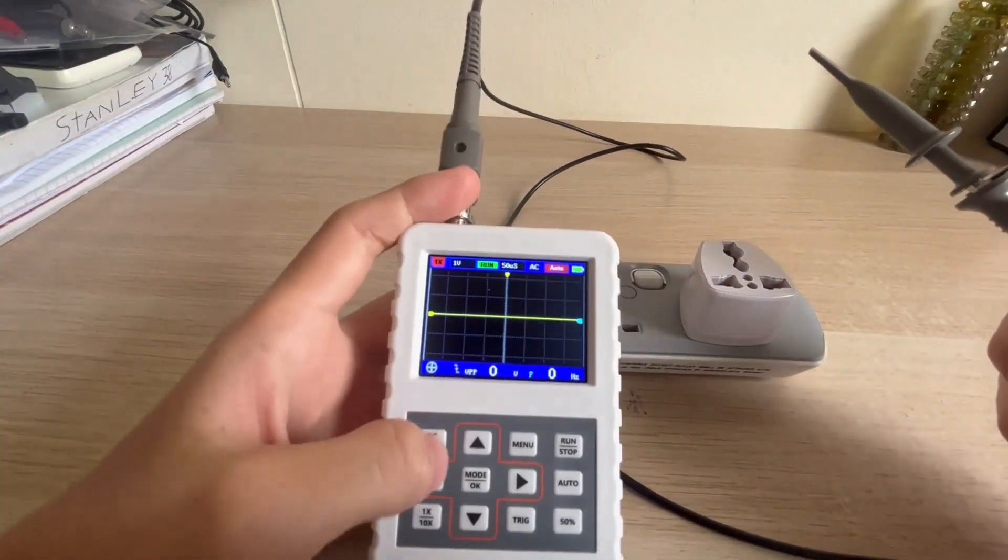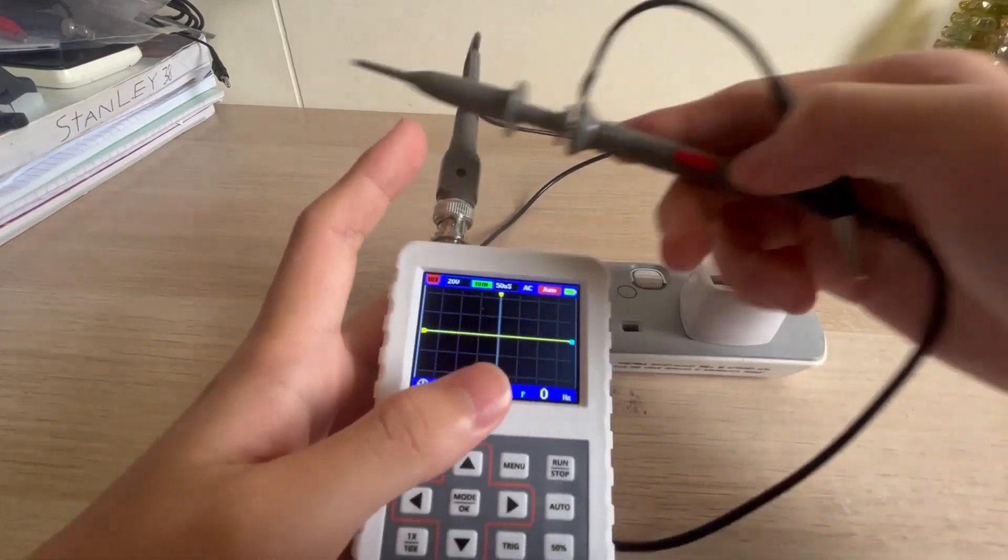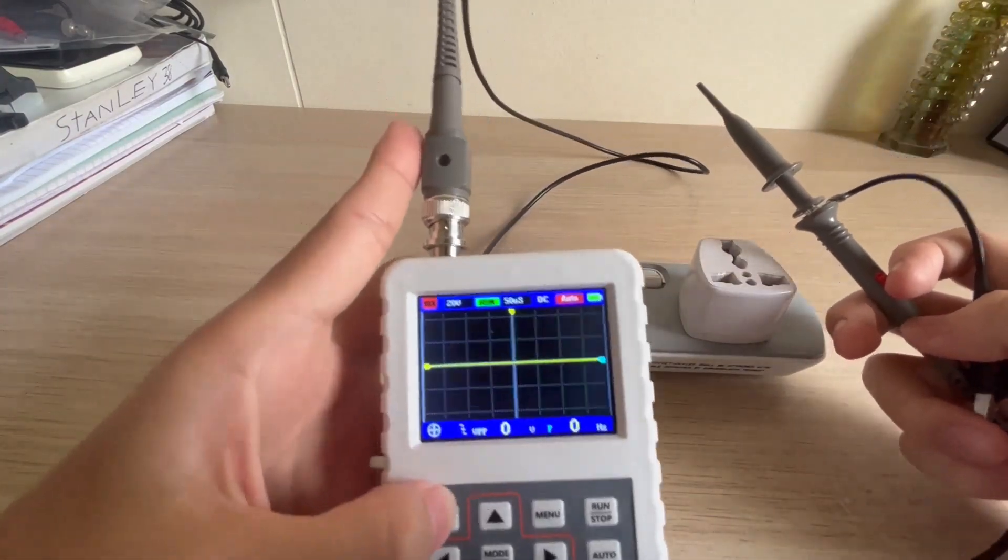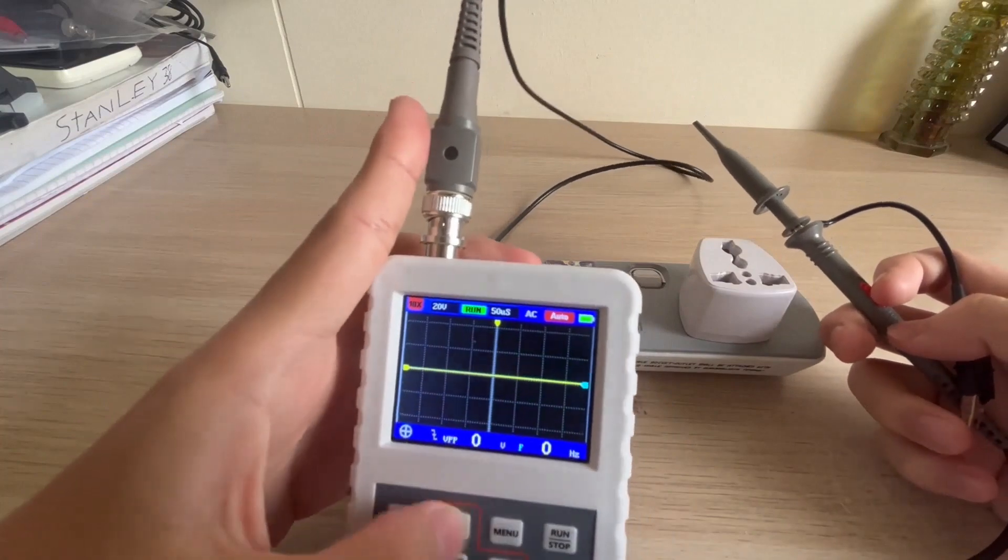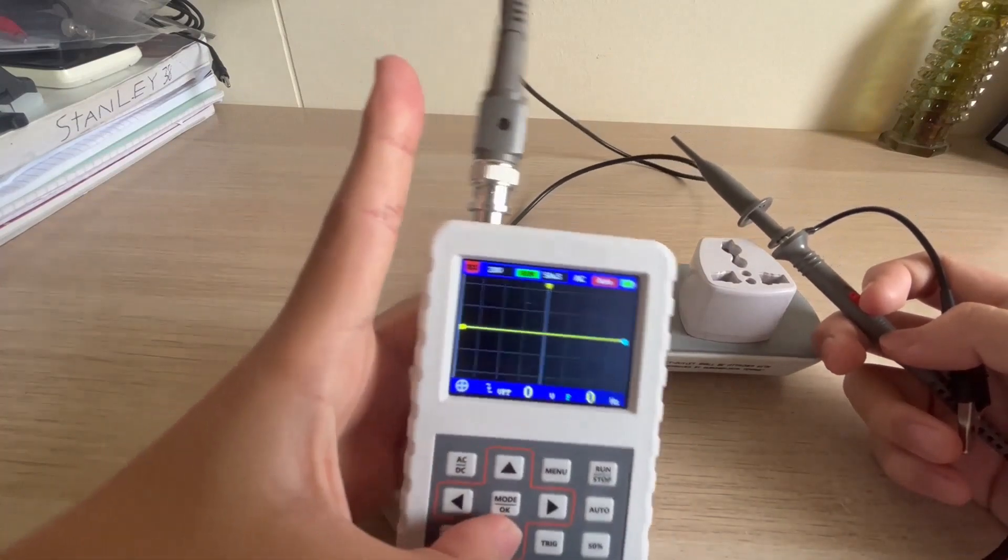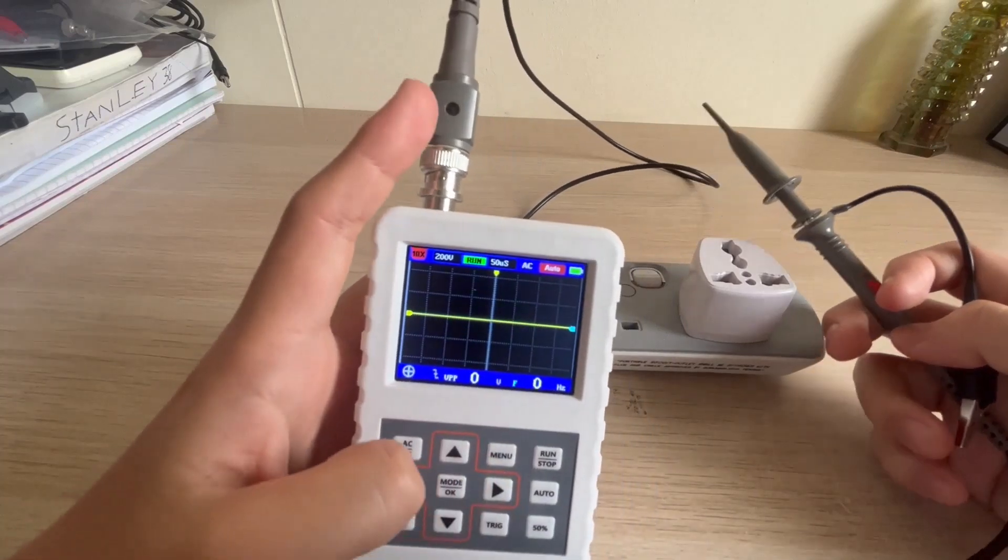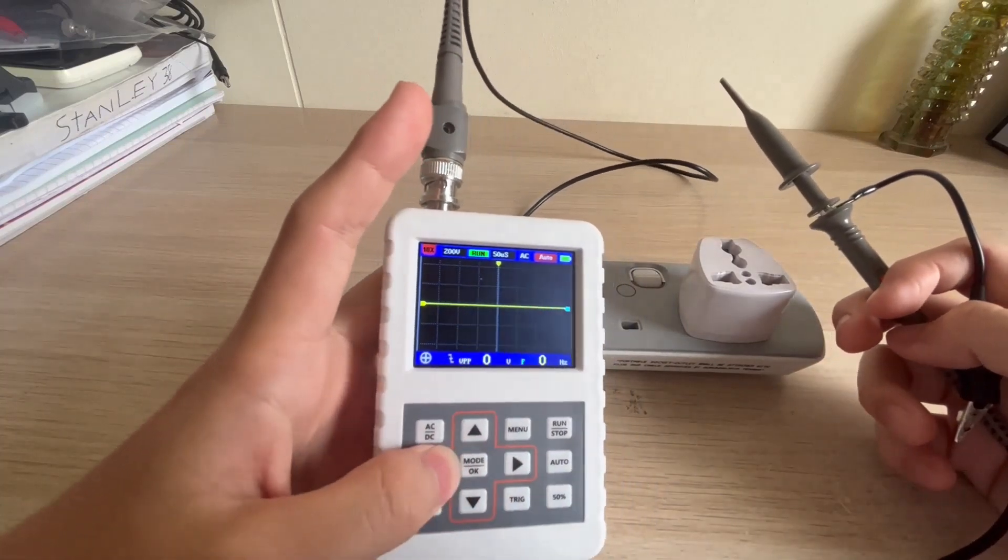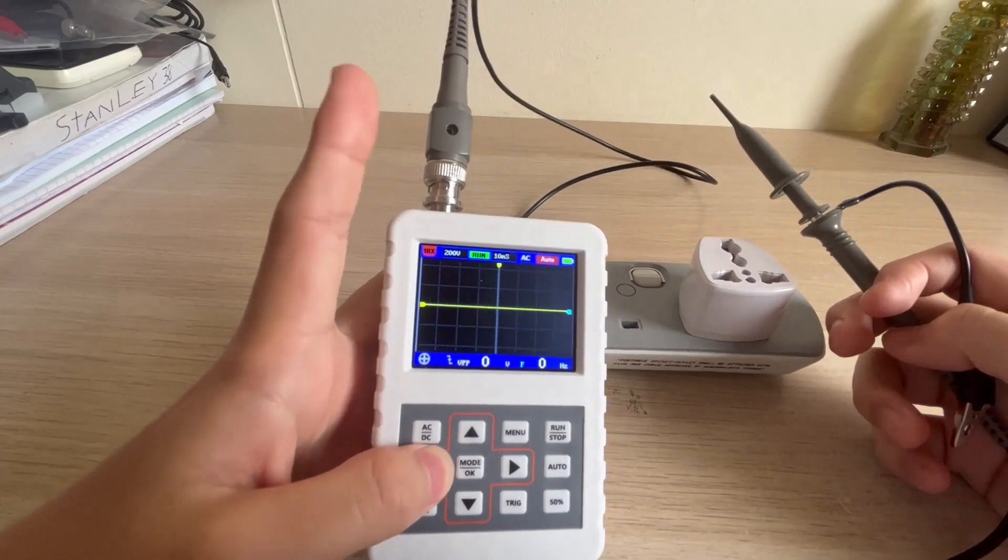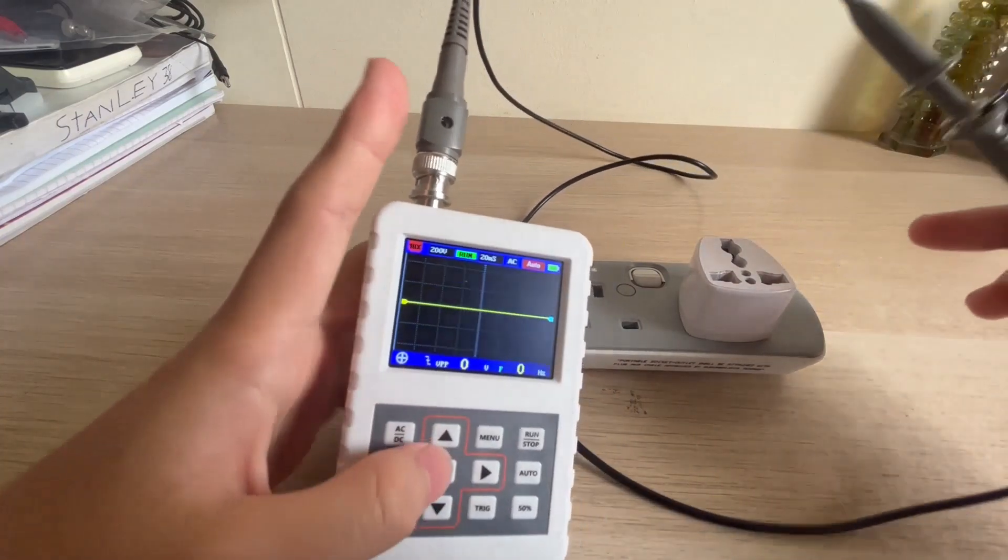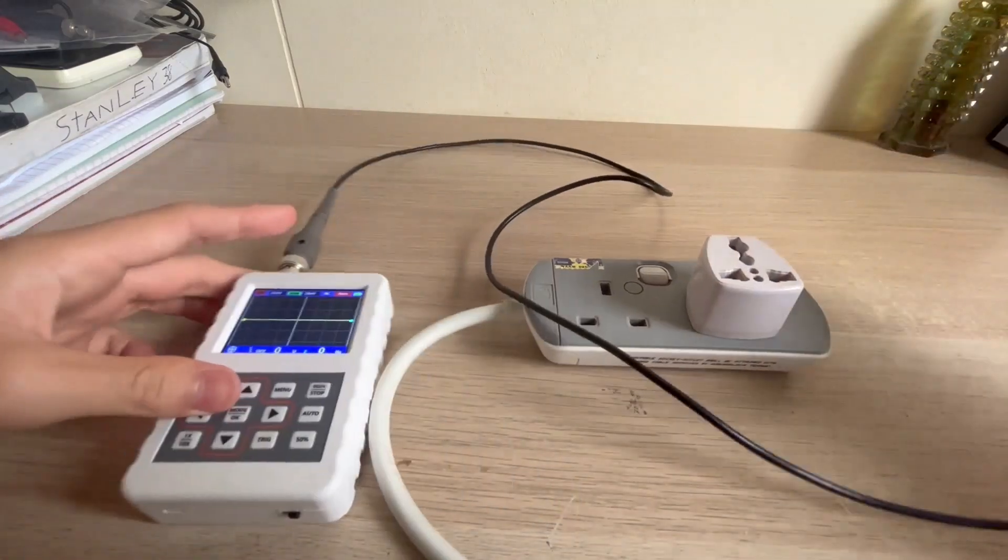Now let's change it to 10 times like as shown here and we're going to change it to AC, not DC, and we're going to increase the voltage per division to 200 volts and increase the time base per division to probably around 20 or 50 milliseconds or somewhere between that.